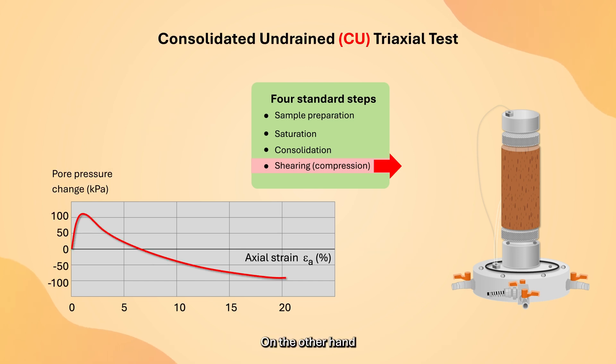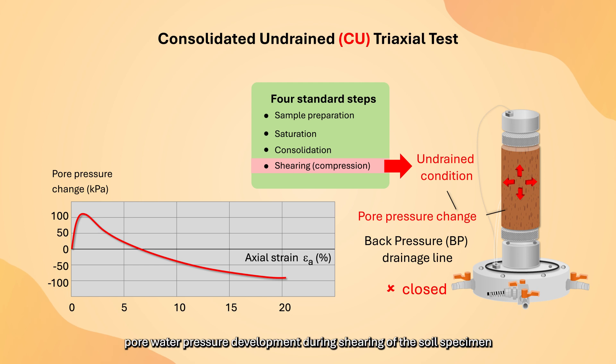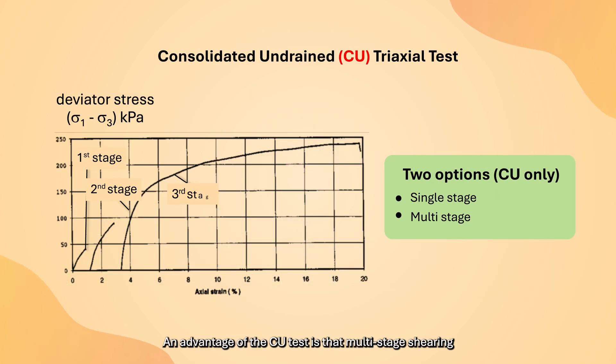On the other hand, the CU test does not allow volume change but can give information on the excess pore water pressure development during shearing of the soil specimen. An advantage of the CU test is that multi-stage shearing can be carried out on the soil specimen.